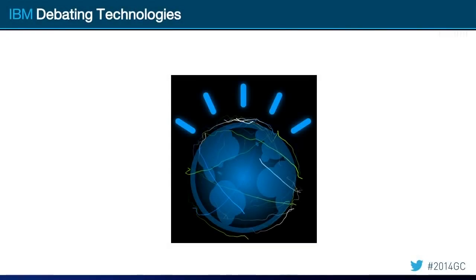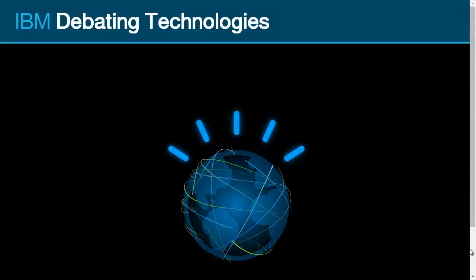Now I'd like to show you a third capability which we've never shown before outside of our research labs. This will give you a hint and a sense for where Watson is going in the future. The real question is: can a computer not just answer complex questions with simple answers, not just take massive amounts of genomic data and come up with better treatments for cancer, but can a computer take raw information and digest, reason on, and understand the context?